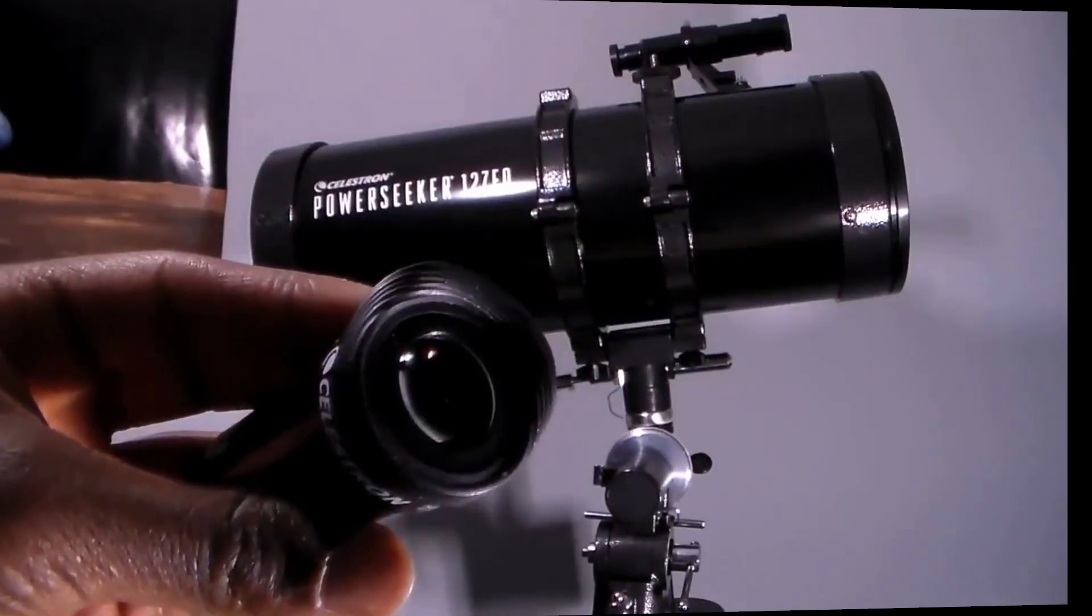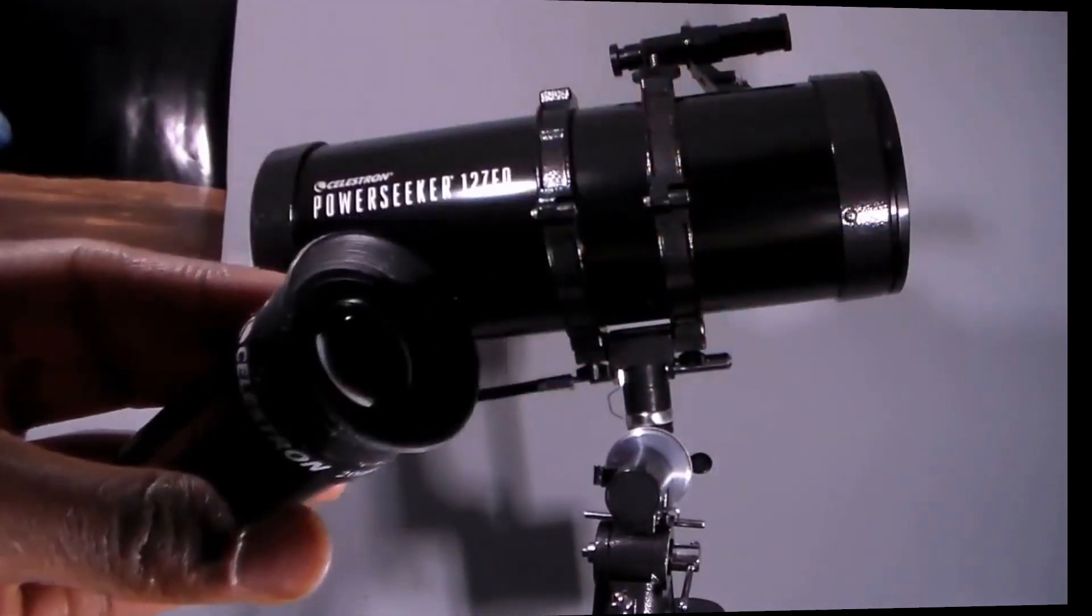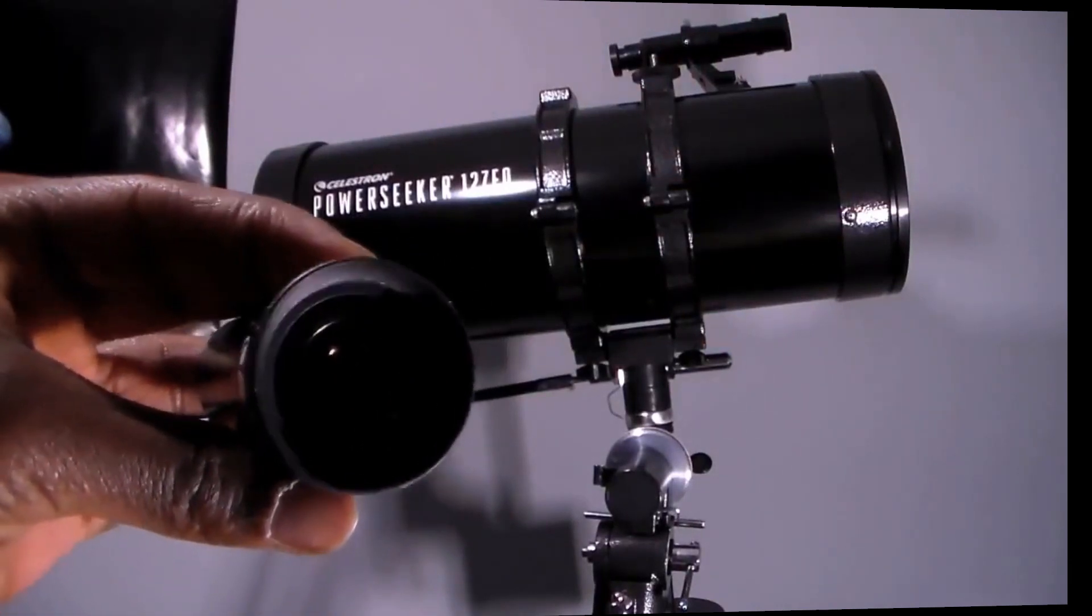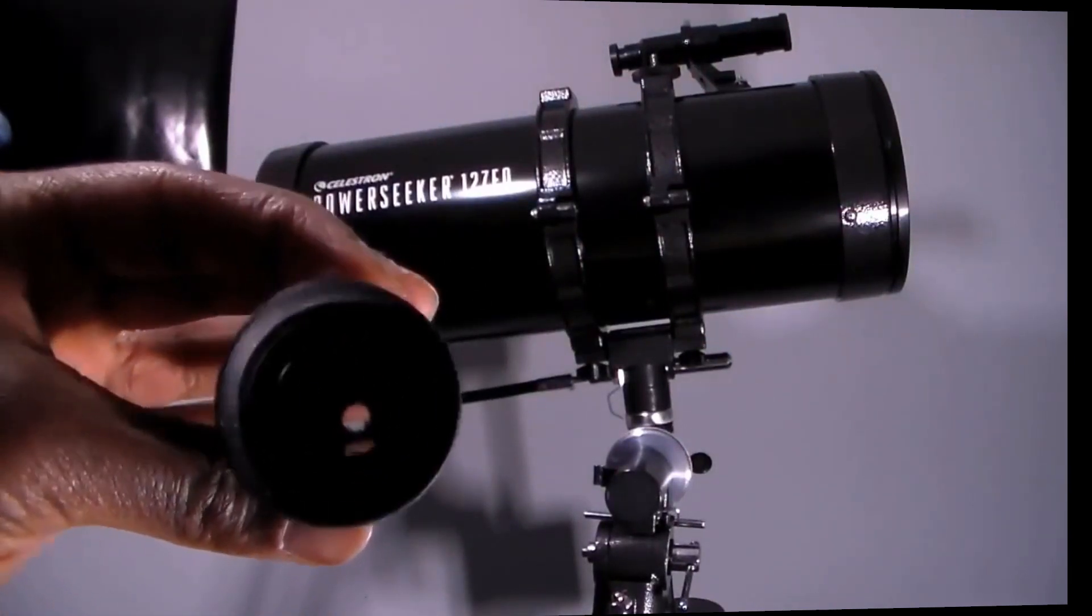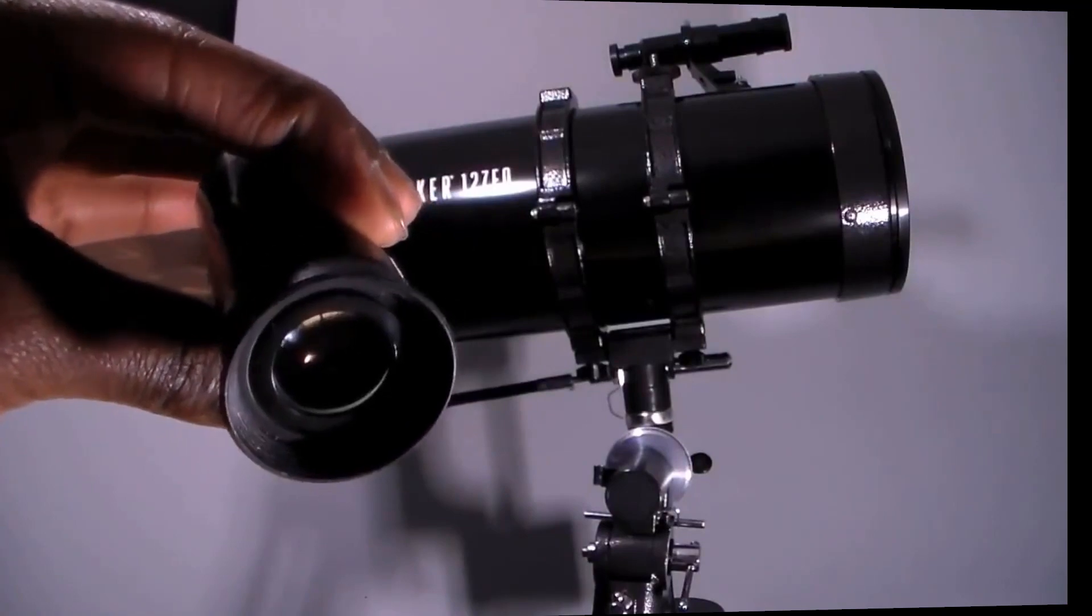Eyepiece 1 has a magnification of 50 and eyepiece 2 has a magnification of 250. The Barlow lens triples the magnifying power of each eyepiece.